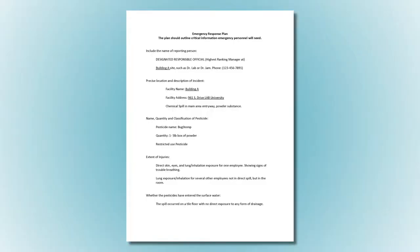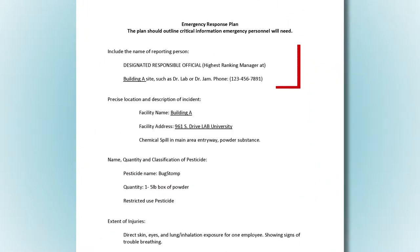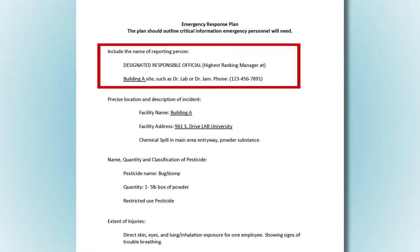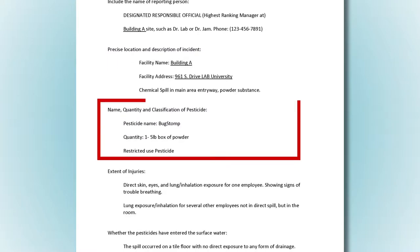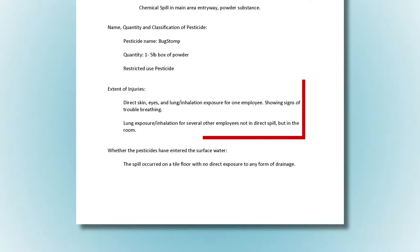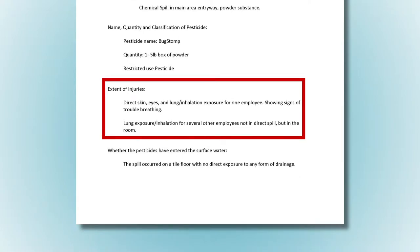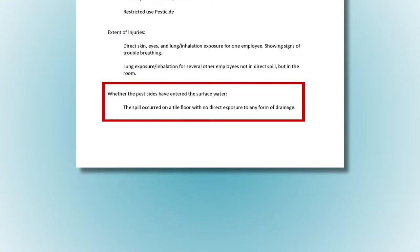The plan should outline critical information emergency personnel will need. Include the name of the reporting person, precise location and description of the incident, name, quantity, and classification of pesticides, extent of injuries, and whether the pesticides have entered the surface water.